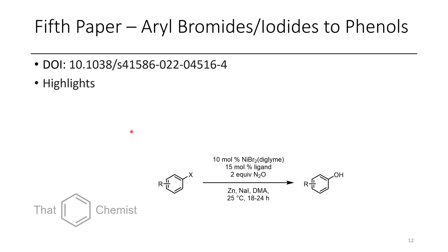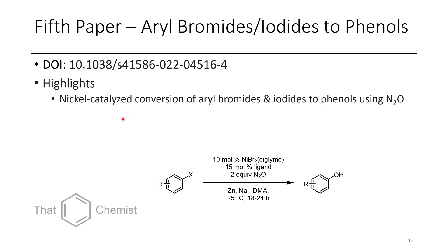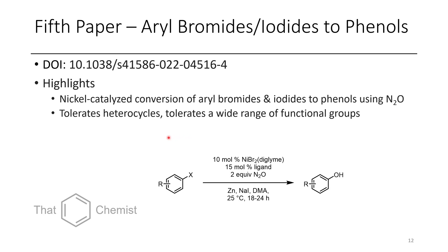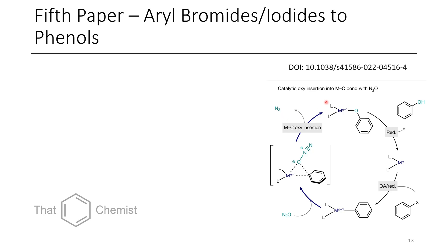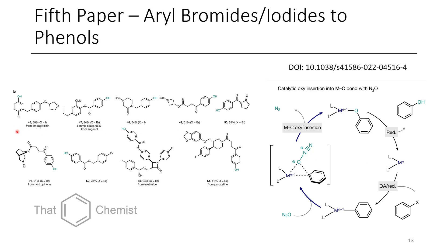The fifth and final paper is the conversion of aryl bromides and iodides to phenols using nickel catalysis with nitrous oxide as the oxygen source. It tolerates heterocycles and a wide range of functional groups, demonstrated on several complex examples. The mechanism involves the nickel species being reduced, followed by oxidative addition. Nitrous oxide then acts as an oxygen donor, and through elimination of nitrogen you get metal complexation to the phenol product; subsequent reduction turns over the catalyst. They demonstrate synthesis of phenols from aryl bromides or iodides with several common motifs found in pharmaceutical compounds.